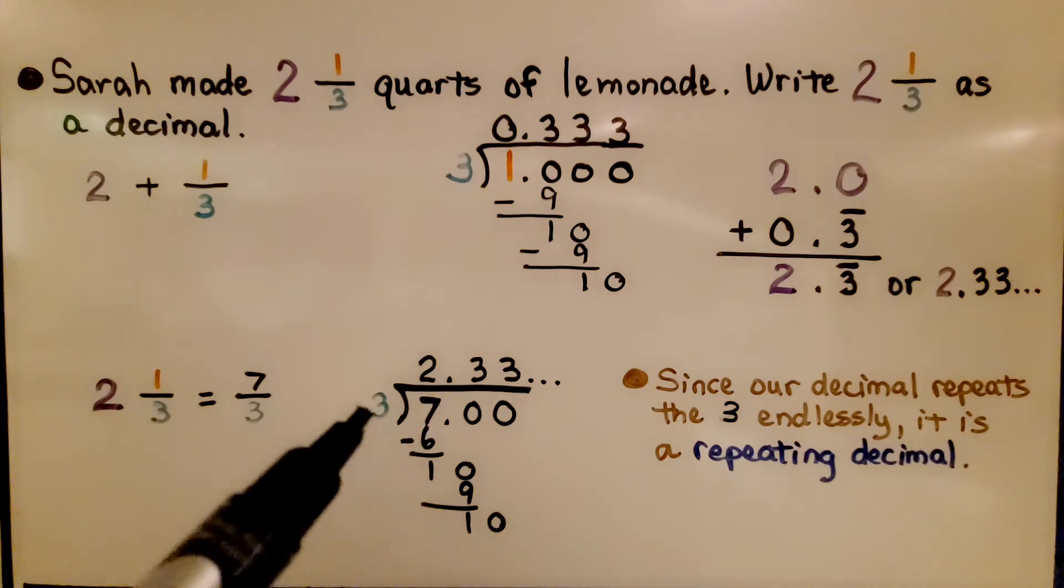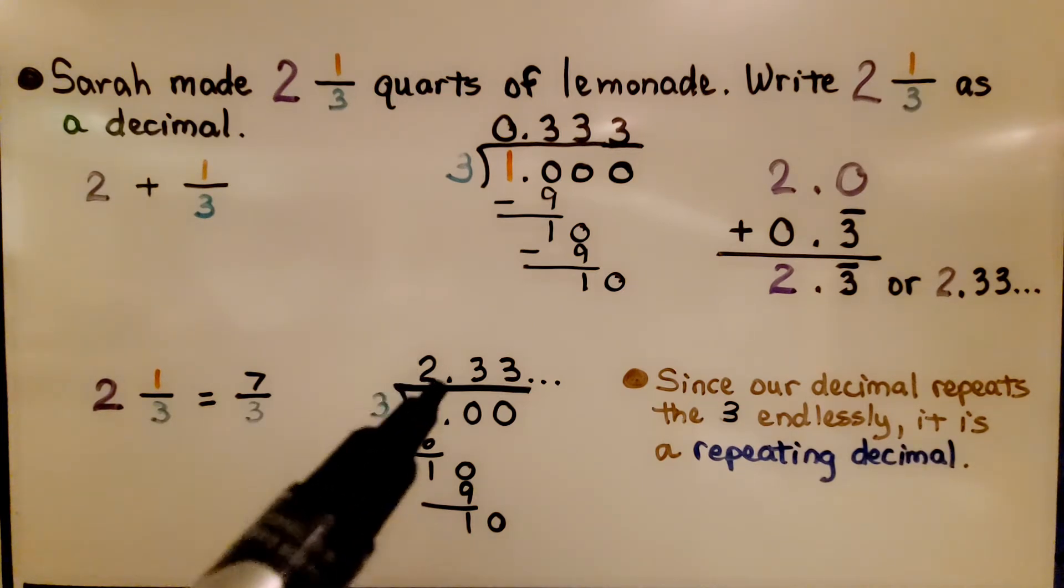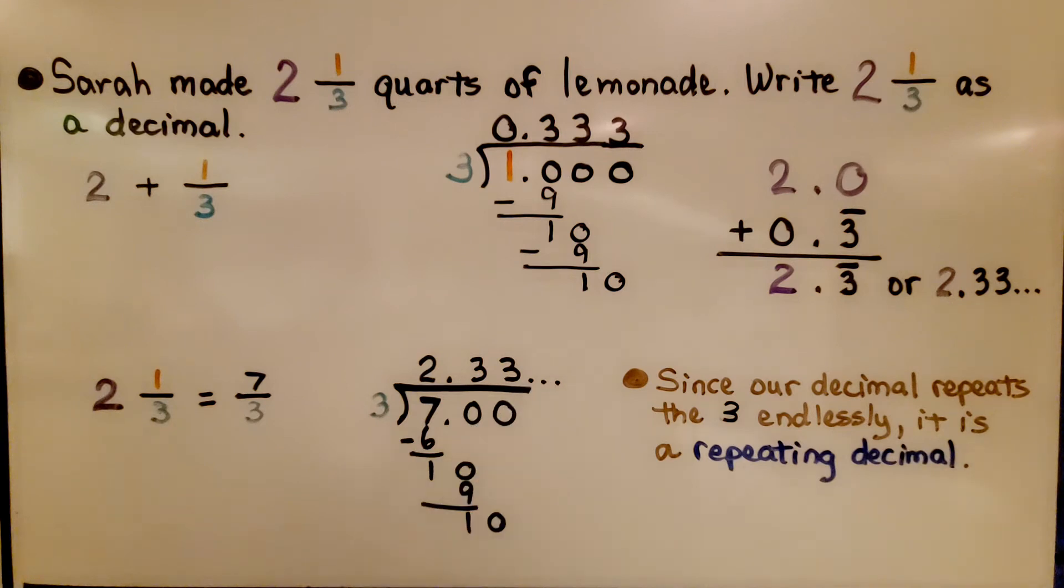And divide 7 divided by 3 and get 2.33 with the ellipses, or we could write 2.3 with the bar over the top. Since our decimal repeats the 3 endlessly, it's a repeating decimal.